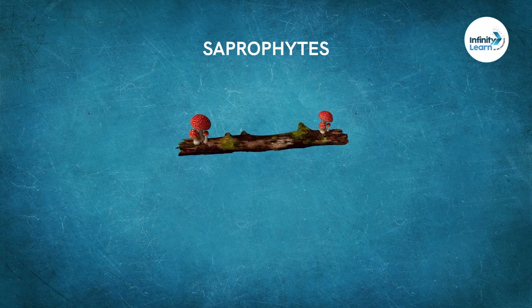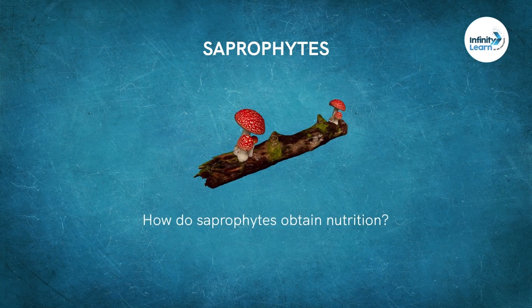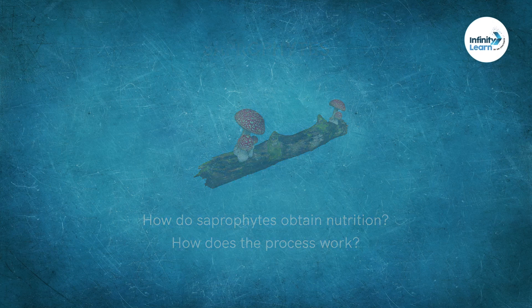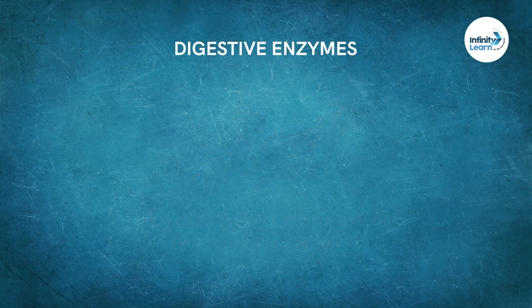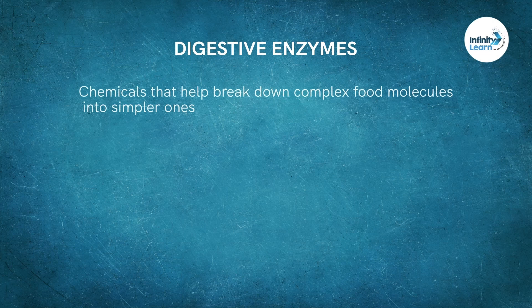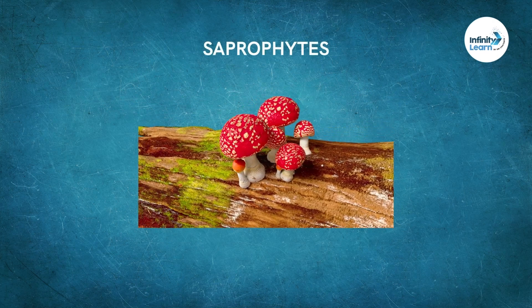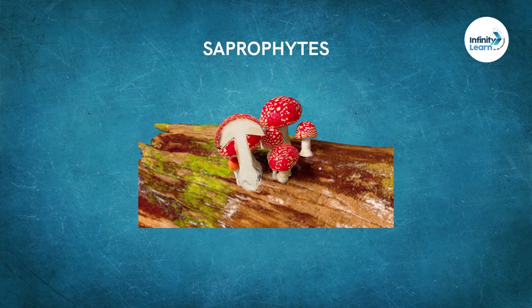How do saprophytes obtain nutrition? If they do not prepare their food and obtain nutrients from decaying matter, how does the process actually work? Digestive enzymes are chemicals which are helpful in breaking down the complex molecules of food into simpler ones. The saprophytes secrete and release various digestive enzymes from their body onto the decaying matter.